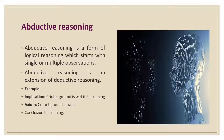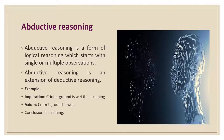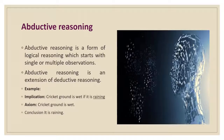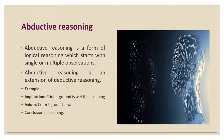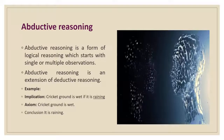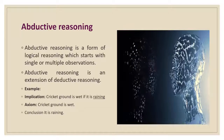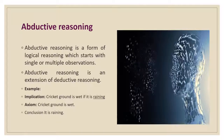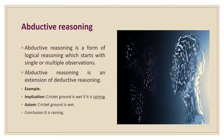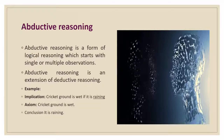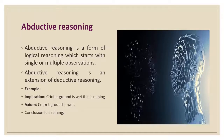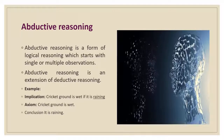Next we will be discussing about abductive reasoning. Abductive reasoning is a form of logical reasoning which starts with a single or multiple observations and seeks to find the most likely conclusion from those observations. This reasoning is an extension of deductive reasoning, but the premises do not guarantee the conclusion. For example, the implication is the cricket ground is wet if it is raining; the observation is the cricket ground is wet; so the conclusion is that it is raining.